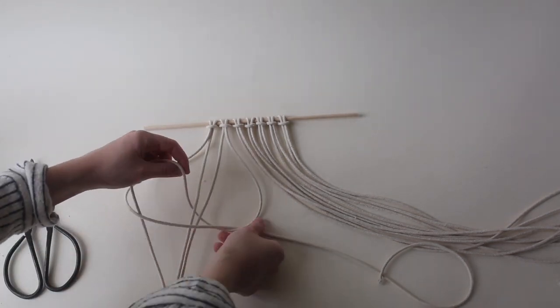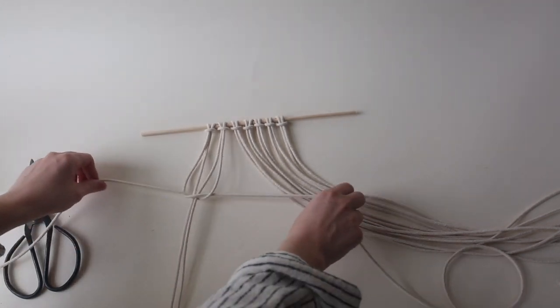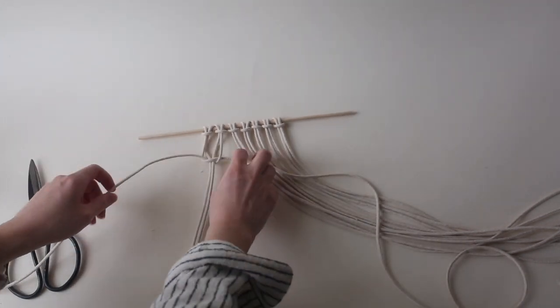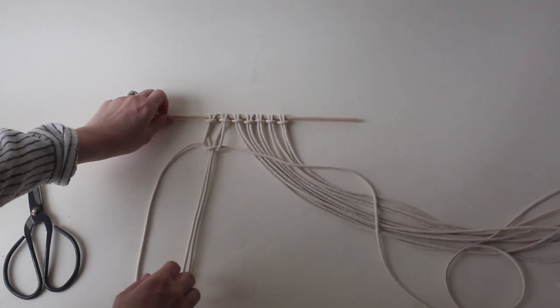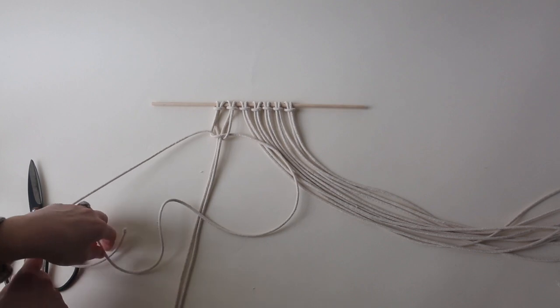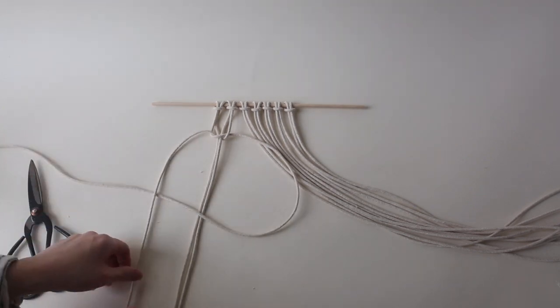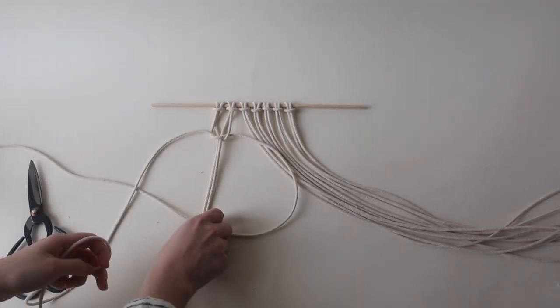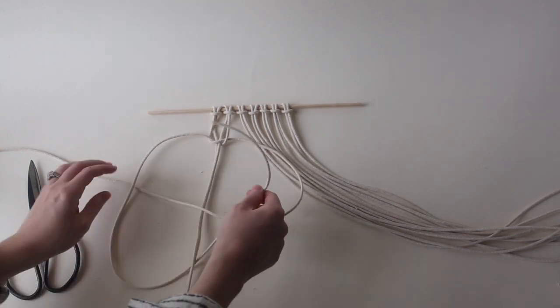Then you take this cord that's on top and bring it up and under and through the center of the four. Now this is half of your square knot. For the other half, you're gonna take this cord and make a four this way, over the two in the center and under the last one.